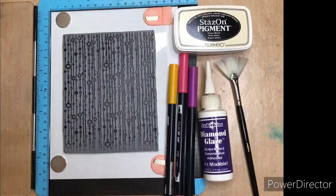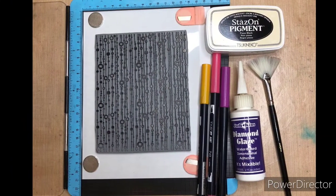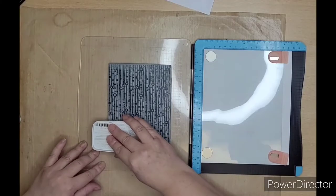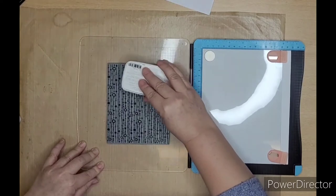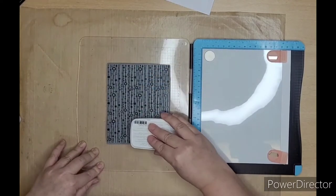In this video I'm going to show you how to create this beautiful diamond glaze background. There's a few things you need. Start by inking your stamp with a permanent ink so that you can stamp onto the clear acetate that we're going to use.